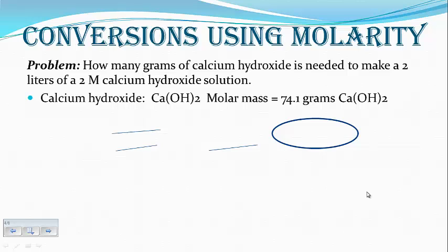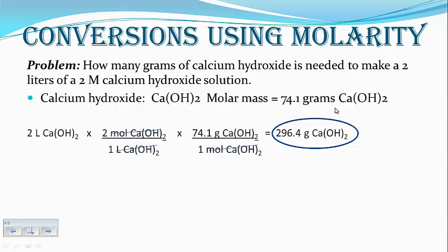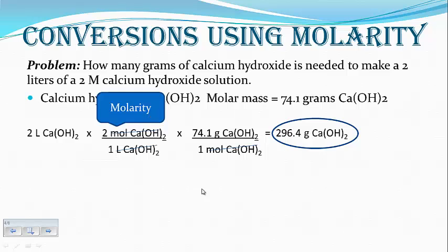Next problem: how many grams of calcium hydroxide is needed to make 2 liters of a 2 molar calcium hydroxide solution? First, you need to write the proper formula for calcium hydroxide and then determine the molar mass using the periodic table, which is 74.1 grams. When we do the conversions, you're going to start off with the 2 liters. You might want to hit pause and try it yourself before I show the answer. When I plug in my numbers, I get 296.4 grams of calcium hydroxide, canceling out units using molarity from the problem and the periodic table for molar mass.